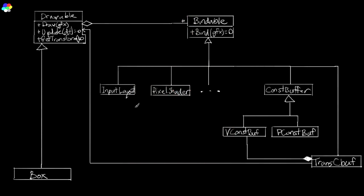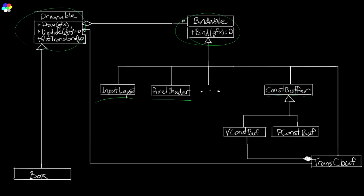Don't worry if you're not used to class diagrams — I'll explain it now. We've got a bunch of different things that can be bound to the pipeline: shaders, buffers, layouts, state objects, etc. We want to bring them all under a uniform interface so we can treat them uniformly when drawing our entities. So we create an abstract class 'Bindable' with a virtual function 'bind' that takes a graphics object and binds the current bindable thing to the pipeline.